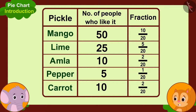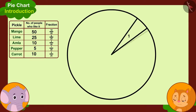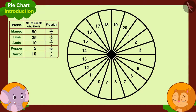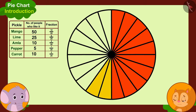But, Appu, you haven't made any pie till now. Don't worry. Now we are going to make the pie of the pie chart. We will make a circle, then we will divide this circle into 20 equal parts. And finally, we will color these parts of the pie chart as per the fractions and illustrate it using the circle.